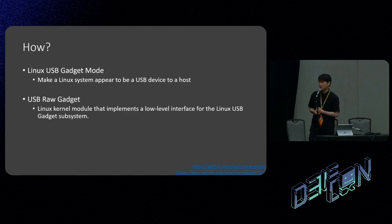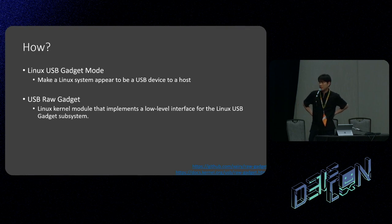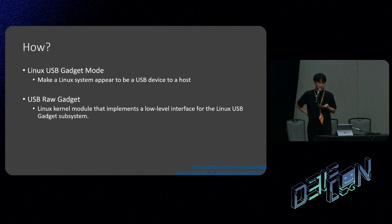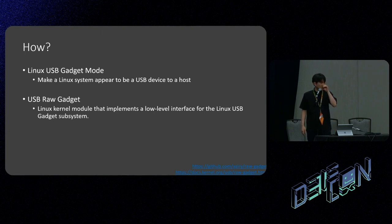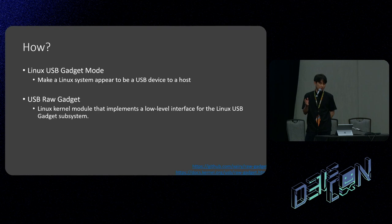We can do these things because of two key components. First is the Linux USB gadget. We need to make the car recognize our device as a USB storage. Linux USB gadget makes a Linux system appear as a USB device to a host — it's a way to emulate a storage device. It's only available in Linux, so we need a Linux device. In our test, we use a Raspberry Pi to emulate a USB storage. The car recognizes a specific folder on the Raspberry Pi as a USB storage.